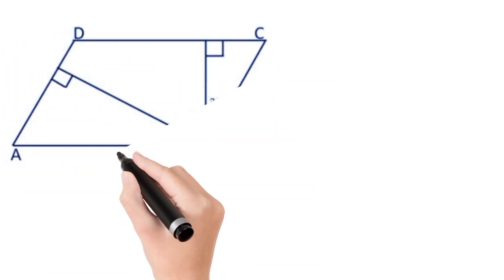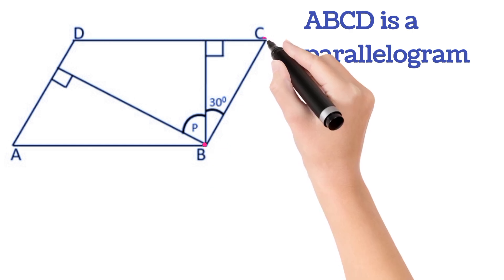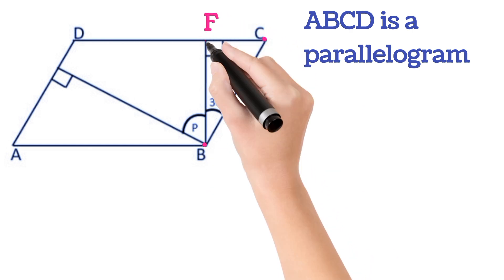So let us see how to solve this question. This is the given figure and we know that ABCD is a parallelogram. Now in triangle BCF, let us name it F.